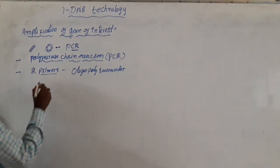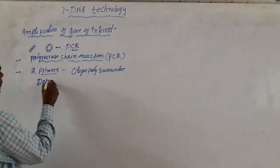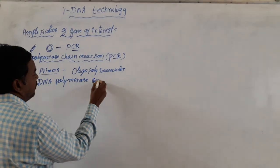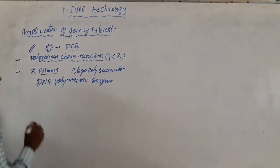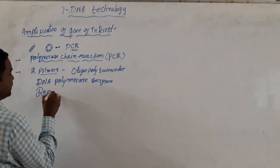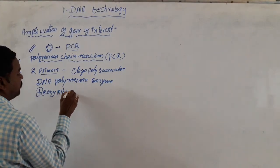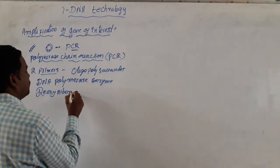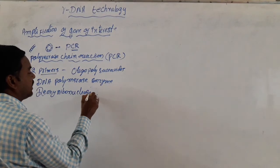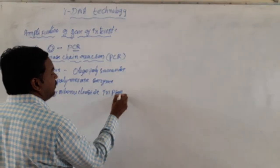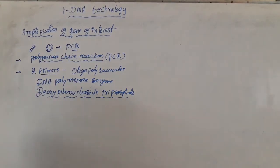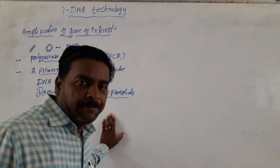In addition to these two primers, DNA polymerase enzyme is also required. Similarly, some substrates — deoxyribonucleoside triphosphates — are also required. These deoxyribonucleoside triphosphates are used as substrates. So this polymerase chain reaction involves DNA polymerase enzyme, two primers which are complementary with the gene of interest, and deoxyribonucleoside triphosphates as substrates.